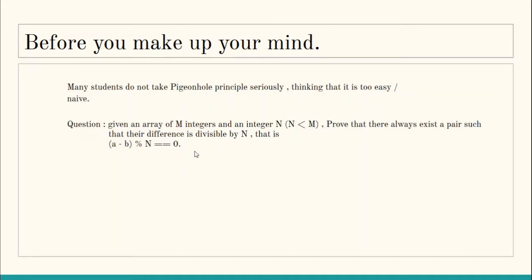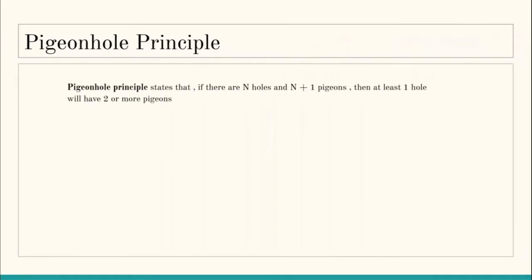Just think for a second and try to solve this. We will be proving this fact later in the same lecture. So let's see what the pigeonhole principle is. As mentioned, it is easy to understand: if there are n holes and n plus one pigeons — where pigeons are supposed to live in holes — then the pigeonhole principle states that there exists at least one hole with two or more pigeons in it.